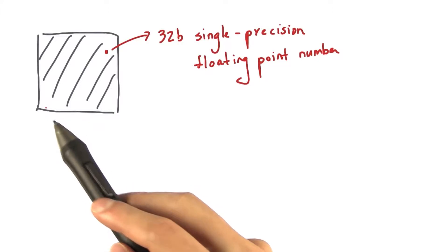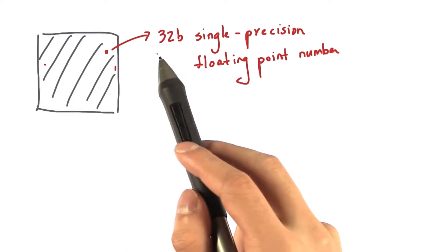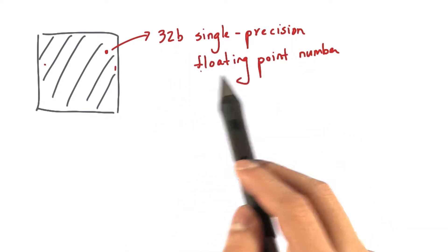We are using CUDA to run a blurring kernel on a grayscale image, where each pixel is a 32-bit single precision floating point number.